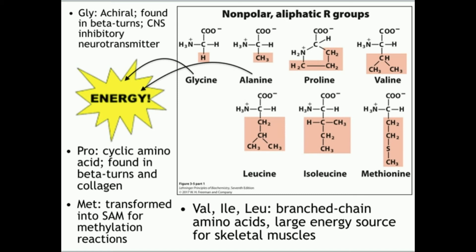So we have glycine, alanine, proline, valine, leucine, isoleucine, and methionine. Out of this group, it turns out that glycine and alanine are very important for energy production. That's because in order to degrade them, their metabolic pathways are actually very simple, so these two amino acids are used a lot for energy production.